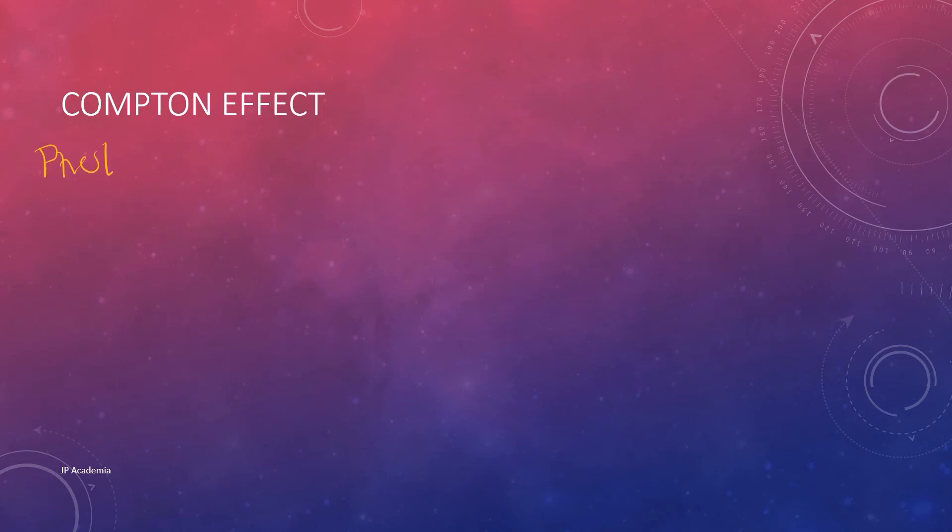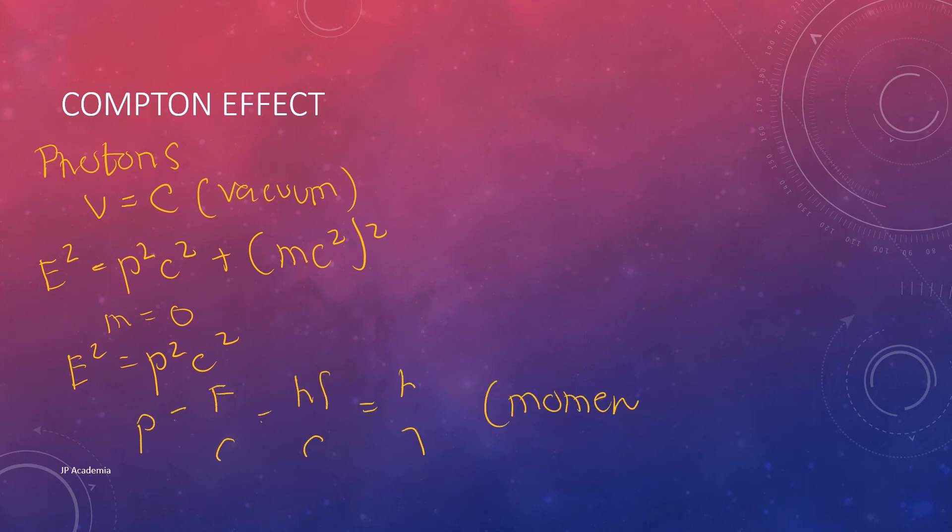Another experiment in 1923 by Arthur Compton confirms this particle nature of light through scattering of x-rays, given that photons' speed is equal to the speed of light in a vacuum. Thus, the rest mass is zero. We can get this momentum expression as I have shown previously.